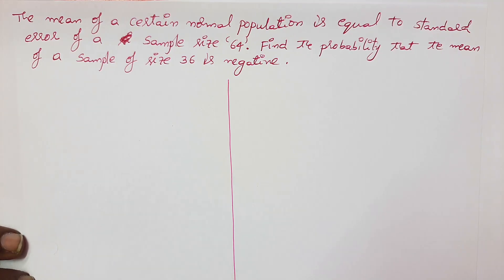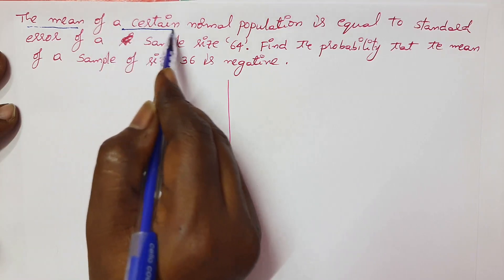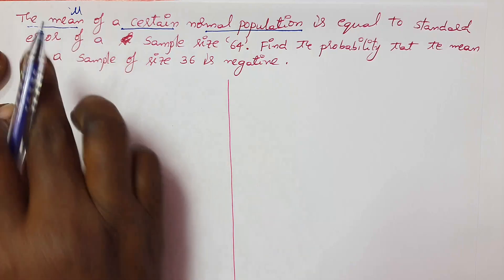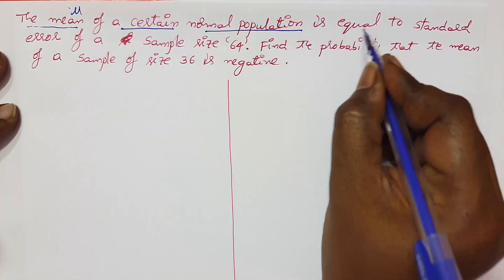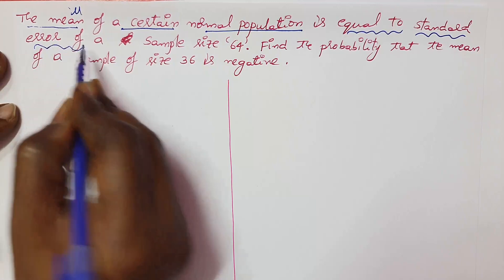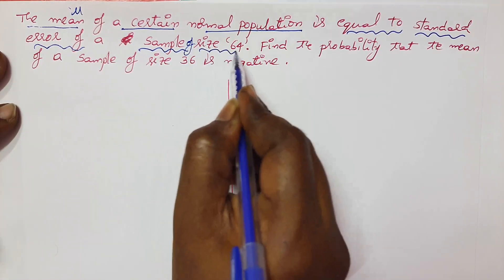Hi everyone, see the next example. The mean of a certain normal population, represented by mu, is equal to the standard error of a sample of size 64.